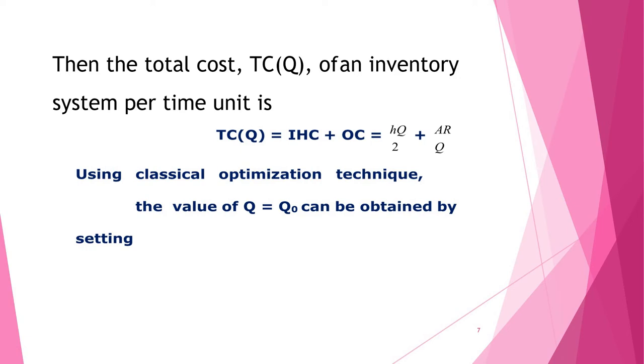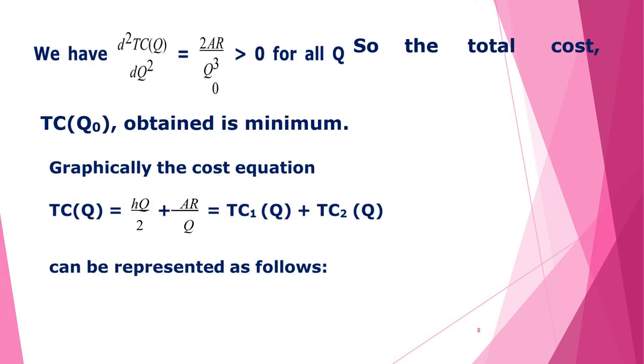We are having a non-linear function in Q and the decision variable is Q. Use classical optimization technique, that is the first order derivative of total cost with respect to Q equal to zero, and simplify it. It gives Q₀ equals square root of 2AR/H. Second derivative of total cost with respect to Q is 2AR/Q₀³. A and R are positive, Q₀ is also positive for all Q. So the total cost TC(Q₀) obtained is minimum.